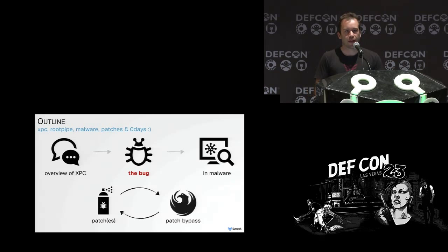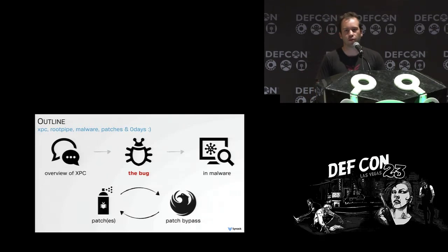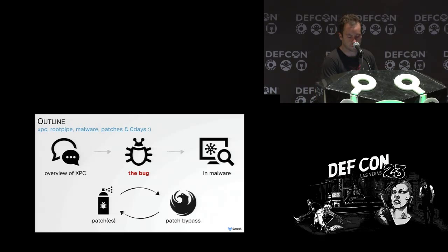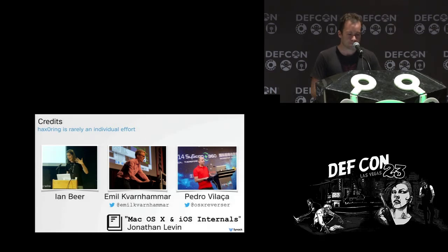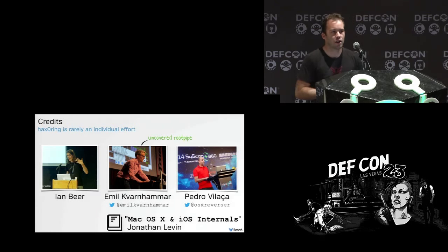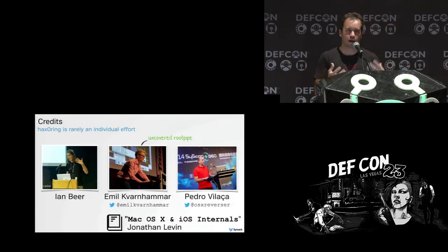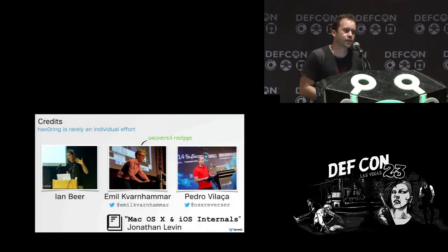We're going to talk about how they botched that patch, how I was able to bypass that to re-exploit the vulnerability on a fully patched system, and then briefly talk about Apple's final patch which seems to maybe squash the bug. Usually credits are given at the end, but there are a lot of really good OSX security researchers who I've learned from and who are partially responsible for the content of this talk, so I just wanted to acknowledge them up front.